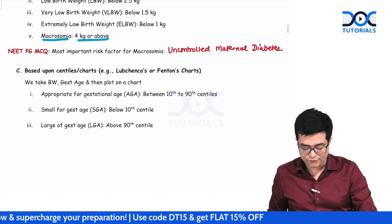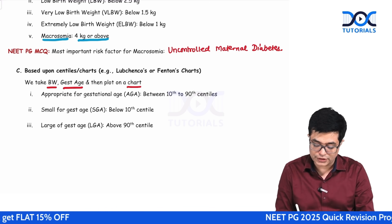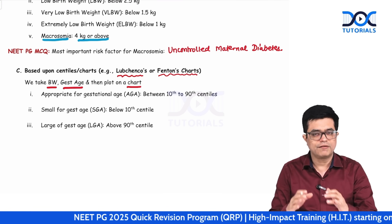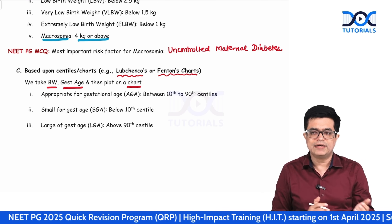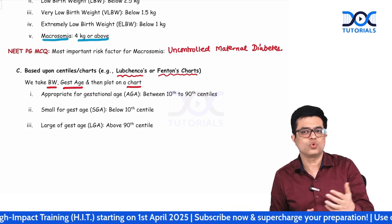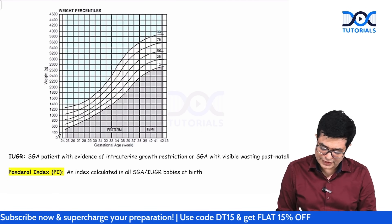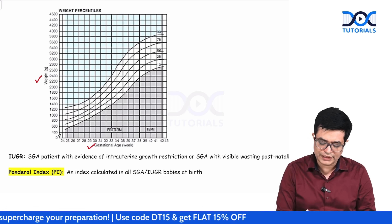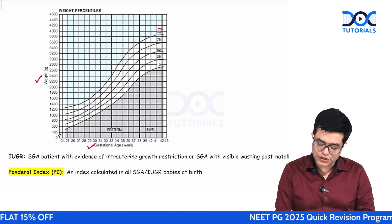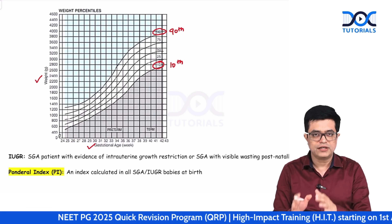The third classification combines birth weight and gestational age, both plotted on a chart. There are two types of charts: Lubchenko's chart and Fenton's chart. They are available for each country and separate charts are available for male and female babies. The chart has gestational age on the x-axis and weight in grams on the y-axis, with percentile curves shown.